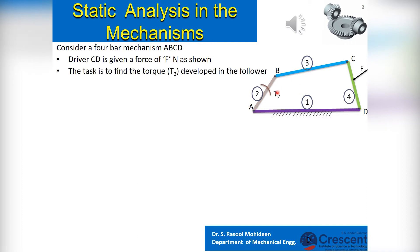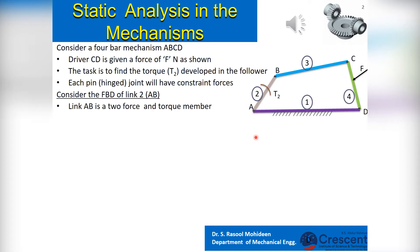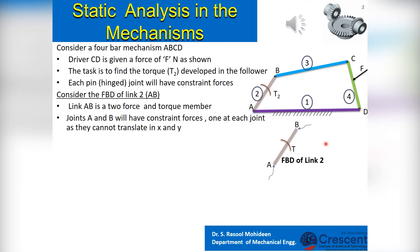We know that each pin or hinged joint will have a constrained force, which is the resultant of horizontal and vertical constrained forces FH and FV acting at it. Based on this, consider the FBD of link 2, that is link AB. Link AB is a 2-force and torque member. Joints A and B will have constrained forces, one at each joint, as they cannot translate in X and Y. At A, we have the resultant force F21, the restriction force acting on link 2 from link 1.